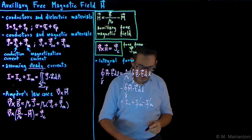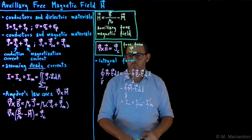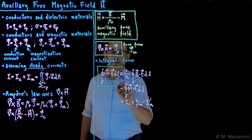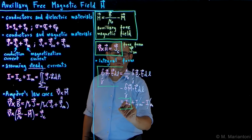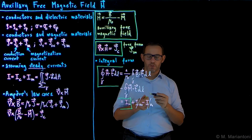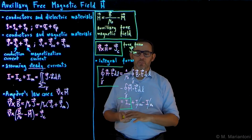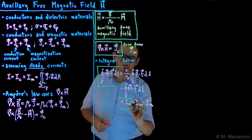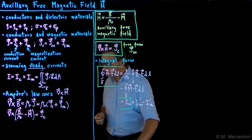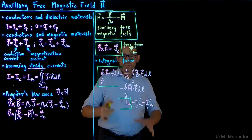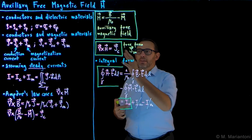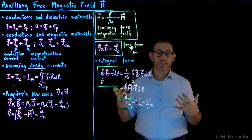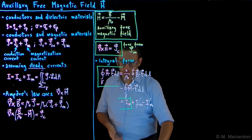Also in integral form, the result is free from Im — it is only given by the conducting current intensity Ic. This integral form is more general than the local differential form. That is the form we eventually need to use if we have a surface of separation between materials, which is case two. We will briefly discuss this later on.